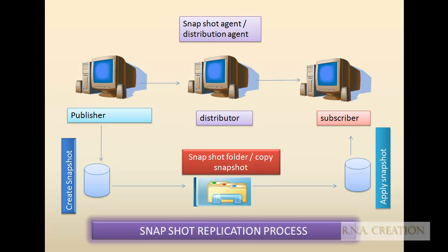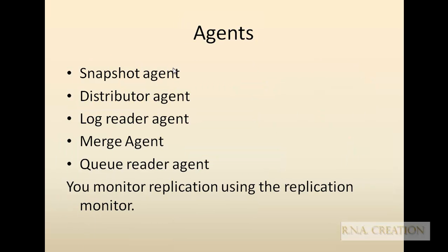For snapshot replication, we need to create one folder for the snapshot that has to be shared. Then the publisher creates a snapshot, it goes to the snapshot folder, and then gets applied to the subscriber. There are different agents involved: snapshot agent, distribution agent, log reader agent, and merge agent, depending upon the type of replication.